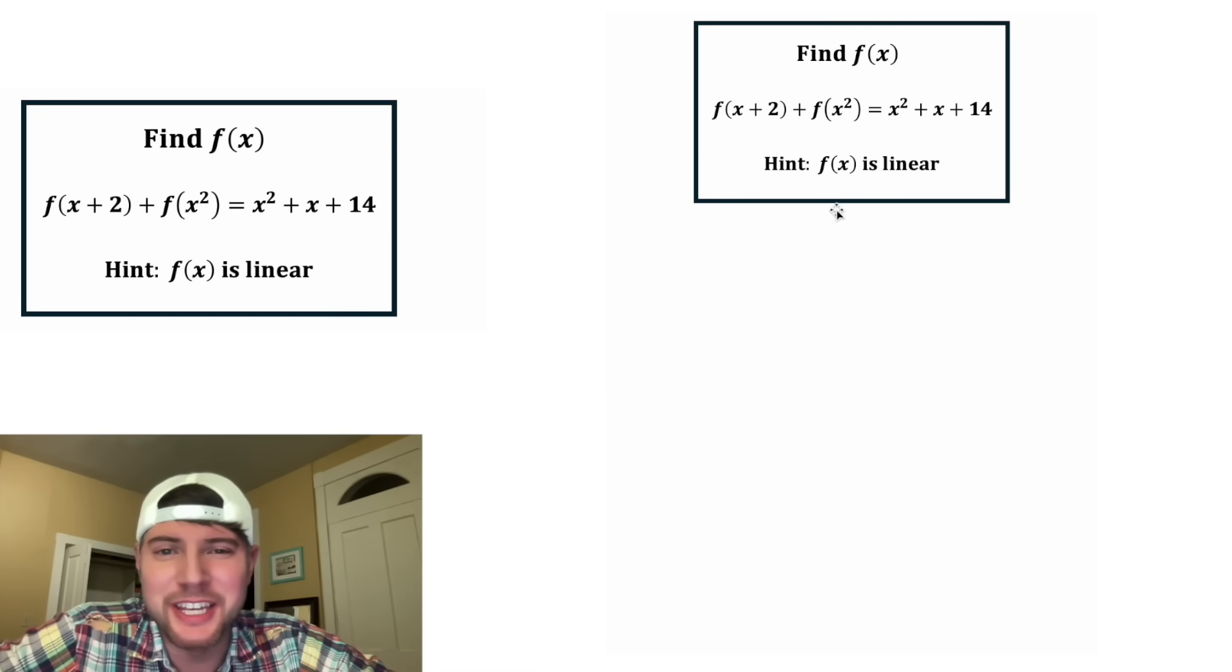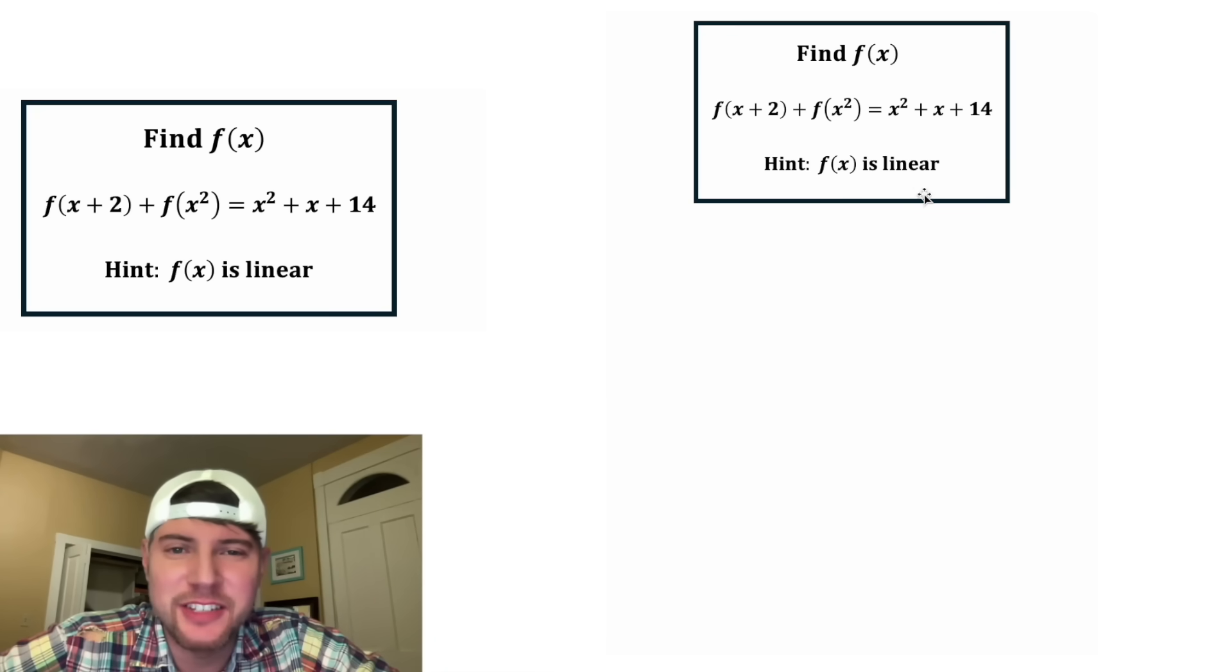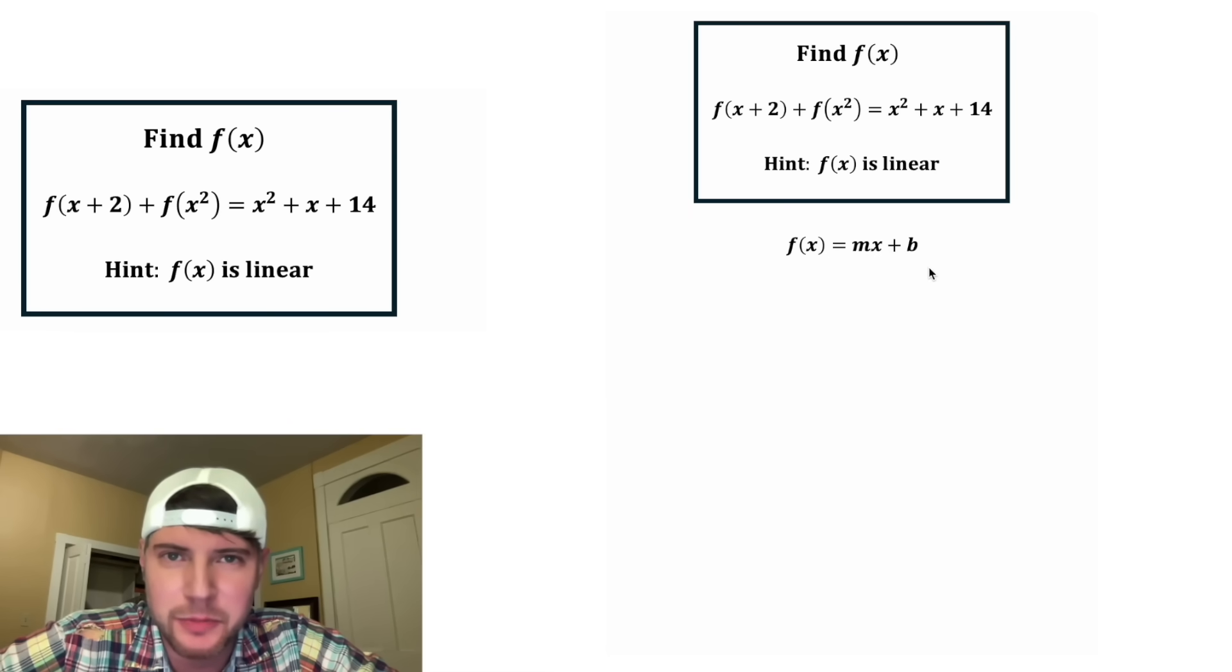So first, I want to start with the hint. Since f of x is linear, it can be expressed as f of x equals mx plus b, and we've got to figure out the values for m and b.